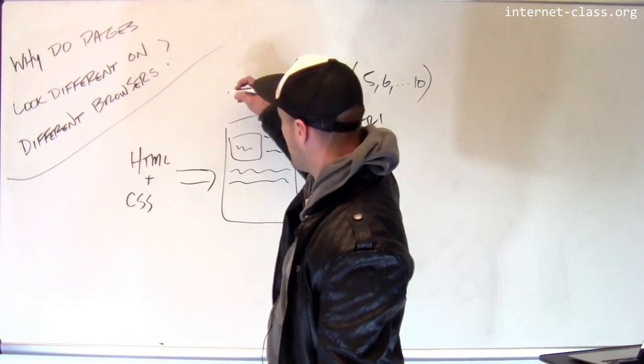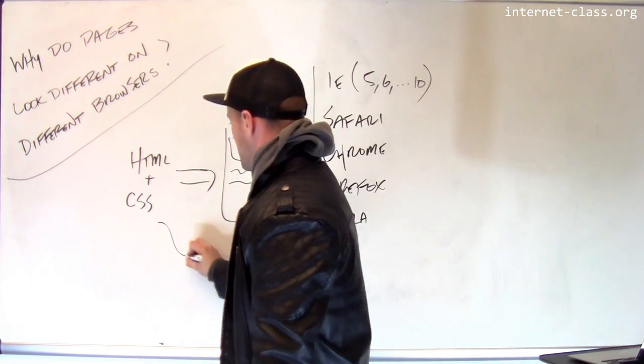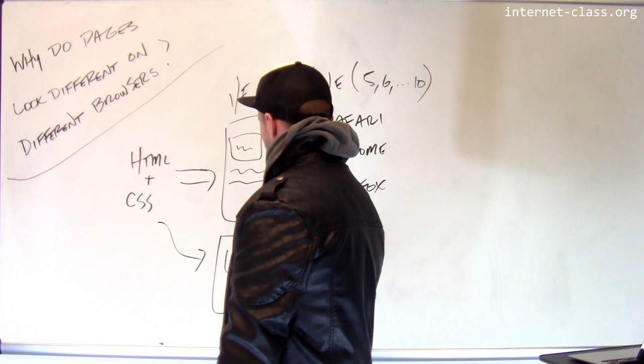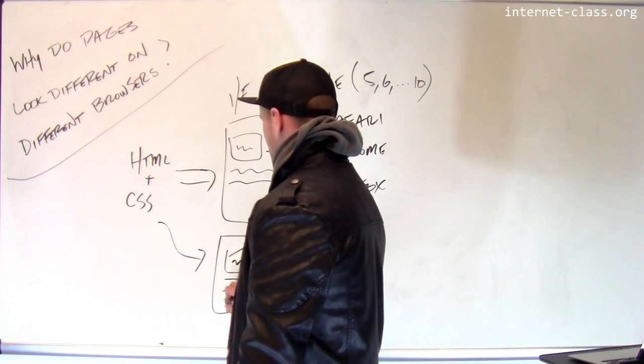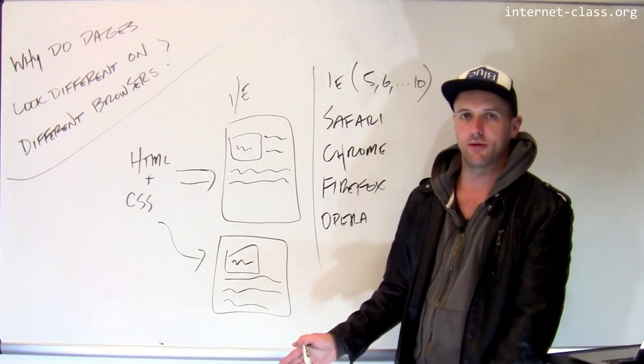Let's say that IE decided that this particular piece of HTML and CSS is going to look like this, and the people doing Safari said, in my case it's going to look like this. Here the text is wrapping around the image, here the text is only below the image.